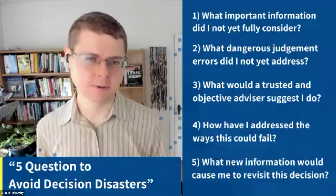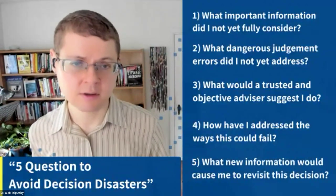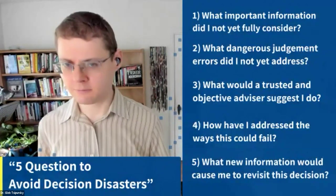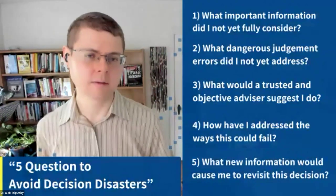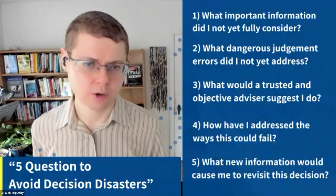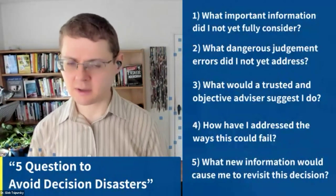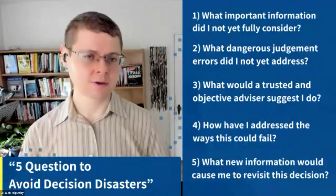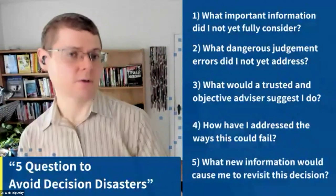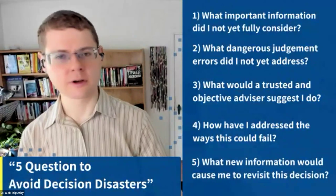Fourth question — how have I addressed the ways this could fail? A way hires often fail is that new employees don't get sufficient mentoring — so early on, make sure to provide that person with a mentor to get them integrated effectively into your practice. Fifth question — what new information would cause me to revisit this decision? You can have a 360-degree review with the people this person interacts with most, at the one-month, two-month, and three-month stage. At 30 days you can give feedback and help them improve; the same at 60 days; and at three months you can make a final decision whether to keep that person.